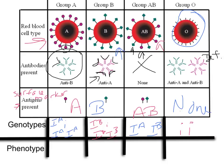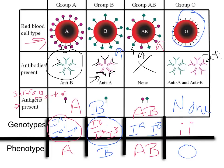When we're talking about blood type, the phenotype is the actual blood type of the person. Someone with genotype I^A I^A or I^A little i has phenotype type A blood. I^B little i or I^B I^B has phenotype type B. The phenotype for I^A I^B is type AB blood. And the phenotype for little i little i is type O.